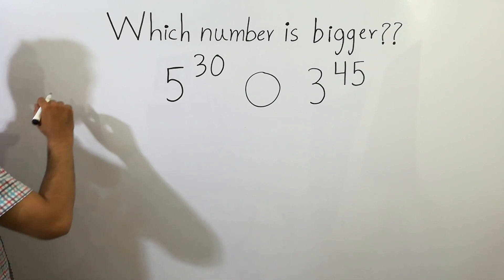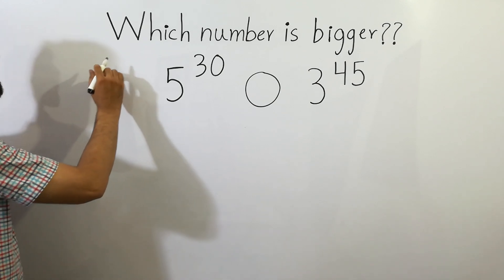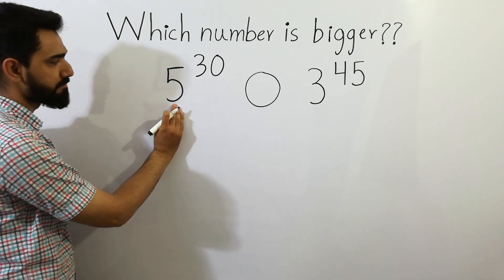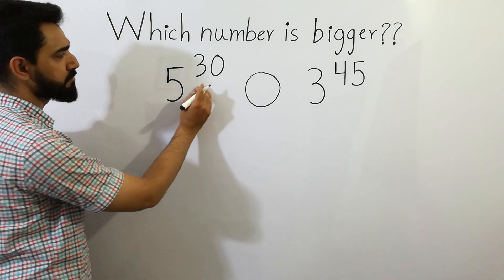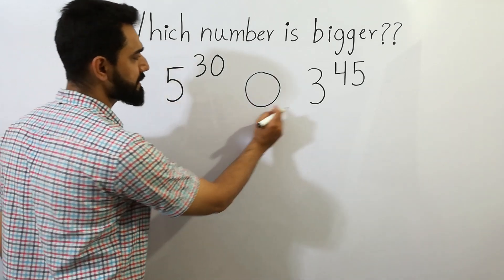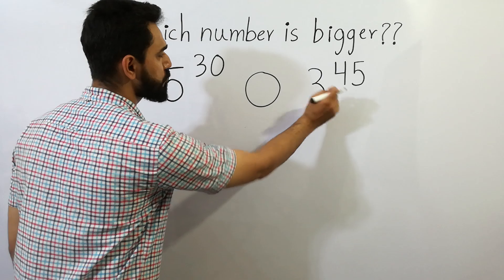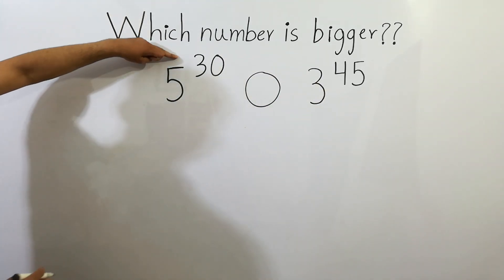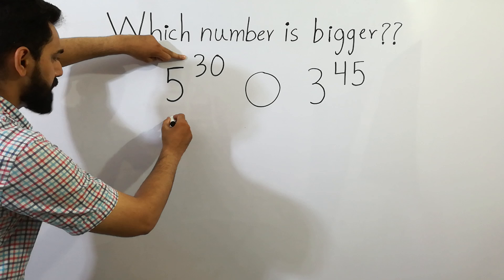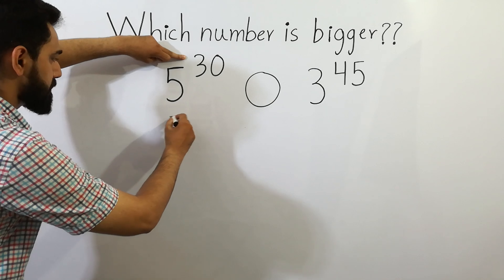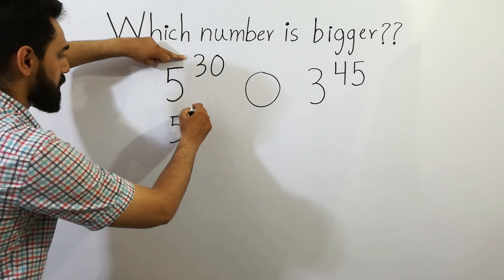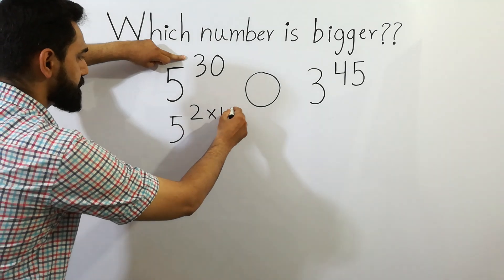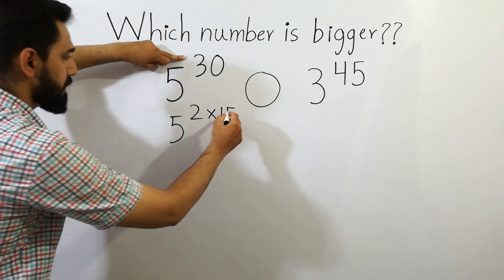Hey guys, let's check it out. Which number is bigger? 5 to the power 30 versus 3 to the power 45. 30 can be written as 2 times 15,